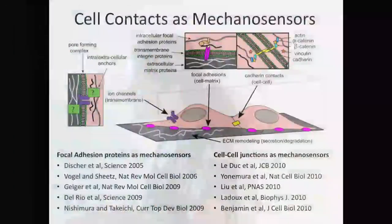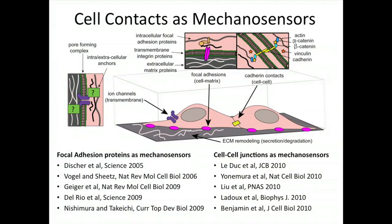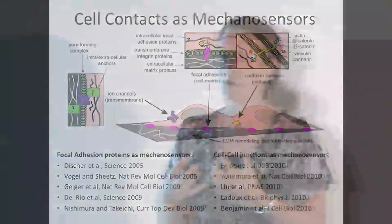Something amazing: focal adhesions — how cells interact with surrounding non-living tissue structure — and cell-cell junctions, the proteins connecting cells to each other, all have mechanically sensitive elements. They all respond to force in the ways I was describing. These little cells themselves are the most interesting force sensors. The proteins involved are each individually mechanically sensitive, and we're finding more and more evidence of that.